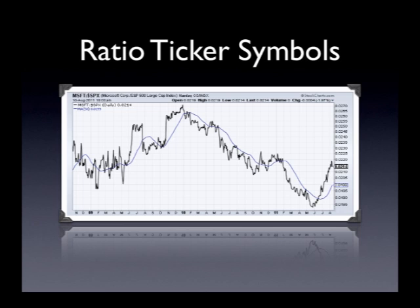Here's an example where we've taken Microsoft and divided it by $SPX. This is straight out of John's book, The Visual Investor. This is called a ratio chart, sometimes a performance chart. The interpretation could not be simpler: if the line is rising, then the first ticker is stronger and outperforming. If the line is falling, then the second ticker is stronger and outperforming, and the first ticker is weaker. You use these comparison charts to get a sense of which things are stronger and which things are weaker.